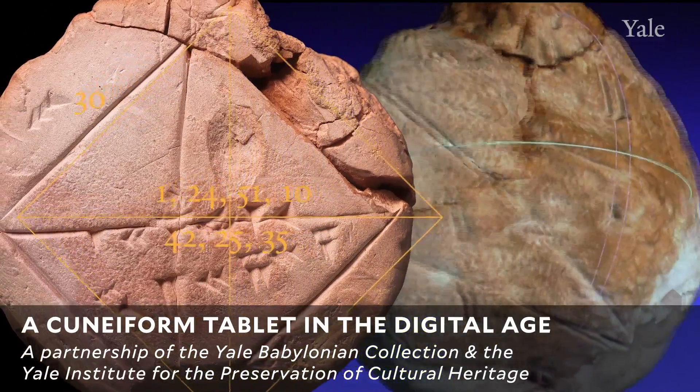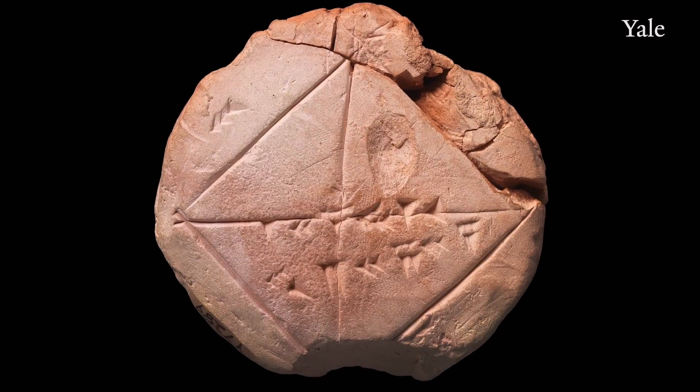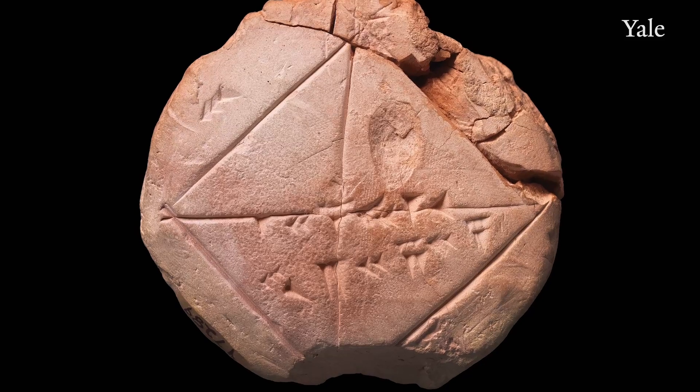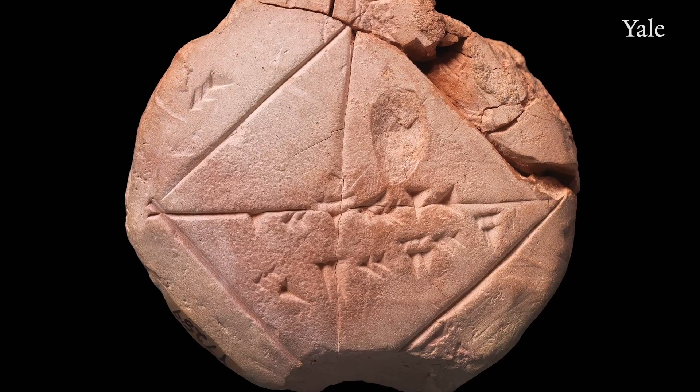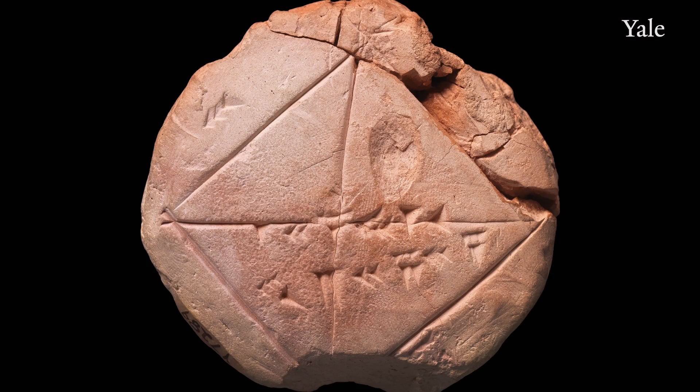The Pythagorean tablet comes from southern Babylonia, and it was made sometime during the old Babylonian period, which is around 1800 BC. The tablet is round, and that's characteristic of school tablets. So the Pythagorean tablet isn't a scholarly document — it's a school exercise.